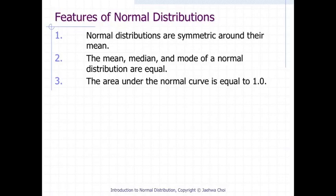Listed here are three of the six features of normal distributions that are going to be illustrated in the remaining sections of this chapter. Normal distributions are symmetric around their mean. The mean, median, and mode of a normal distribution are equal. The area under the normal curve is equal to 1.